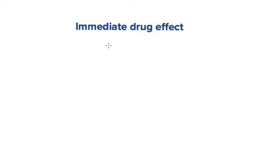The drug response or effect can be either immediate or delayed. The immediate drug effect is when a drug concentration achieves an immediate effect. This means that there is no delay in the change of drug effect relative to the change in the concentration. But how can we describe if a drug shows immediate drug effect or not from just using a response-concentration curve?